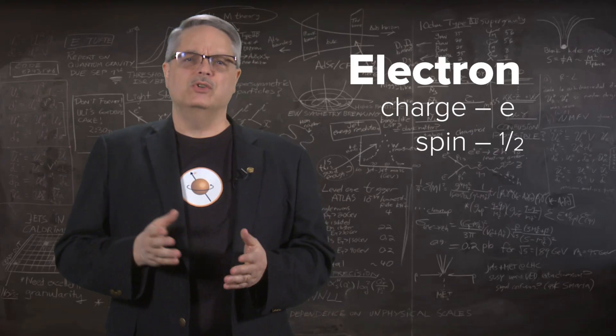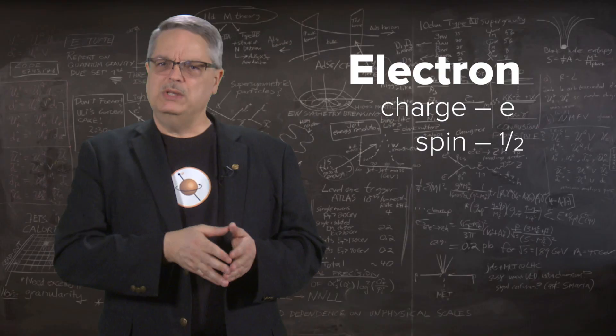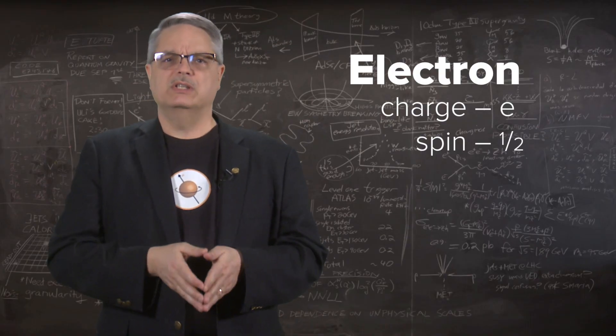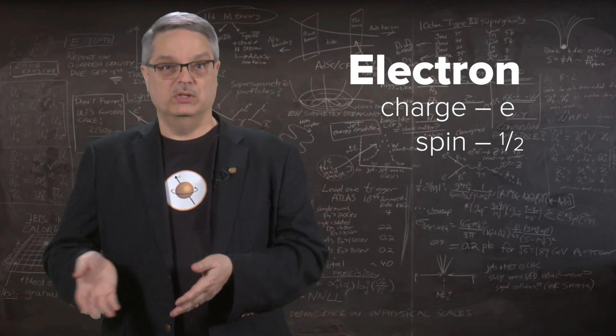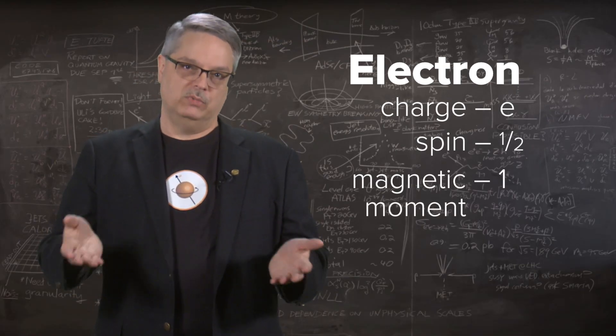There are many ways you could write the numerical value for this quantity, depending on the units you pick. So what we do is pick the most convenient set of units possible, and in those units the predicted magnetic moment is just the number one, or unity. This just makes life easier.